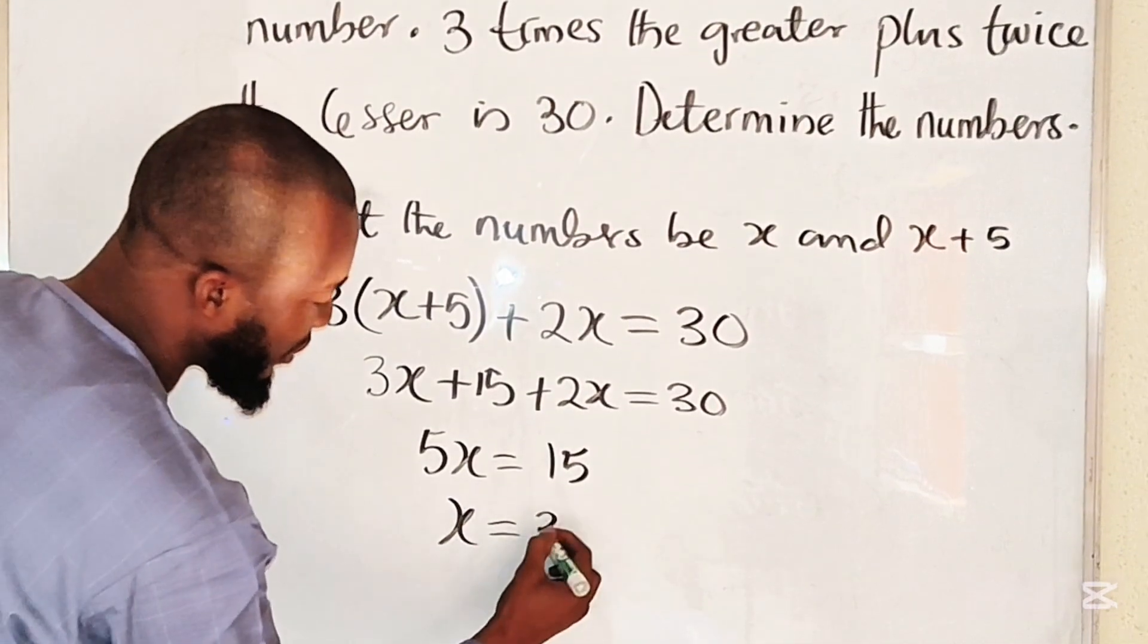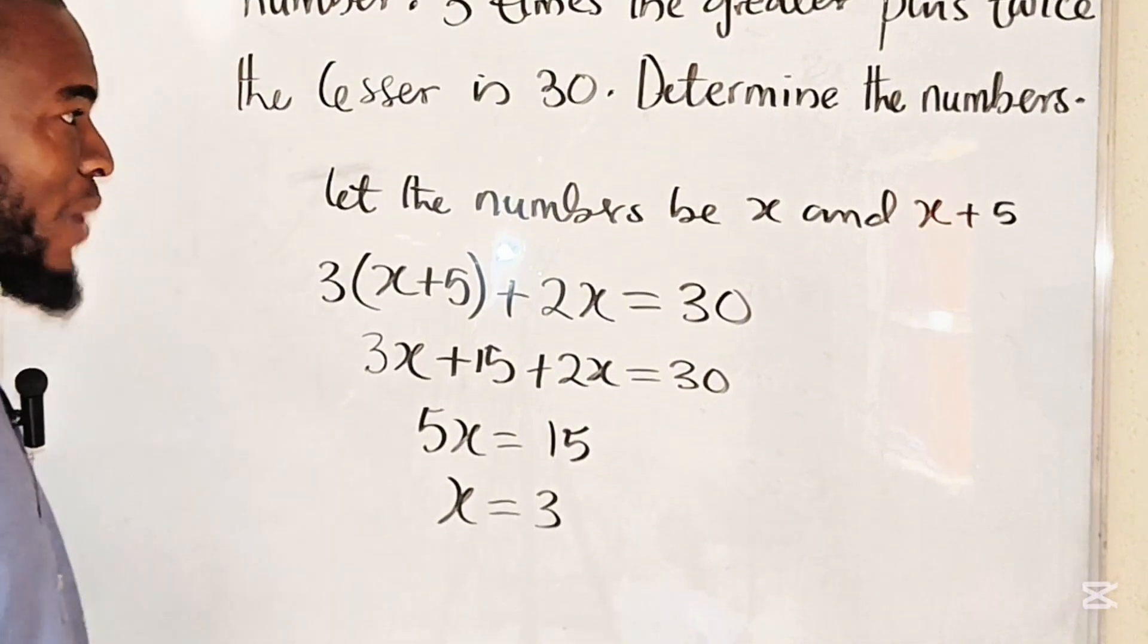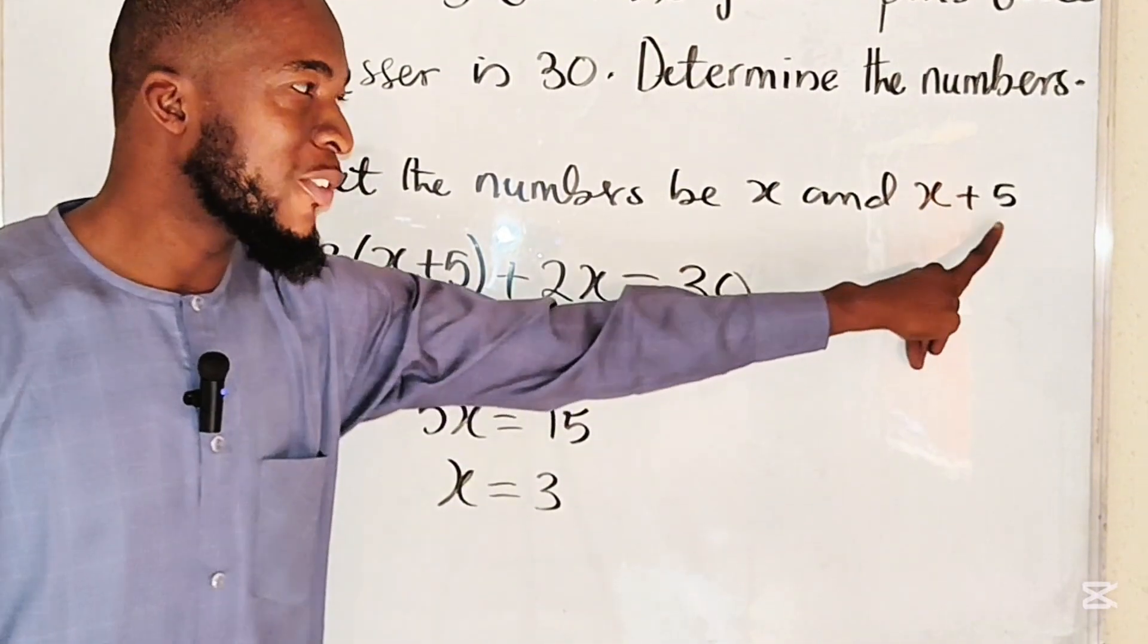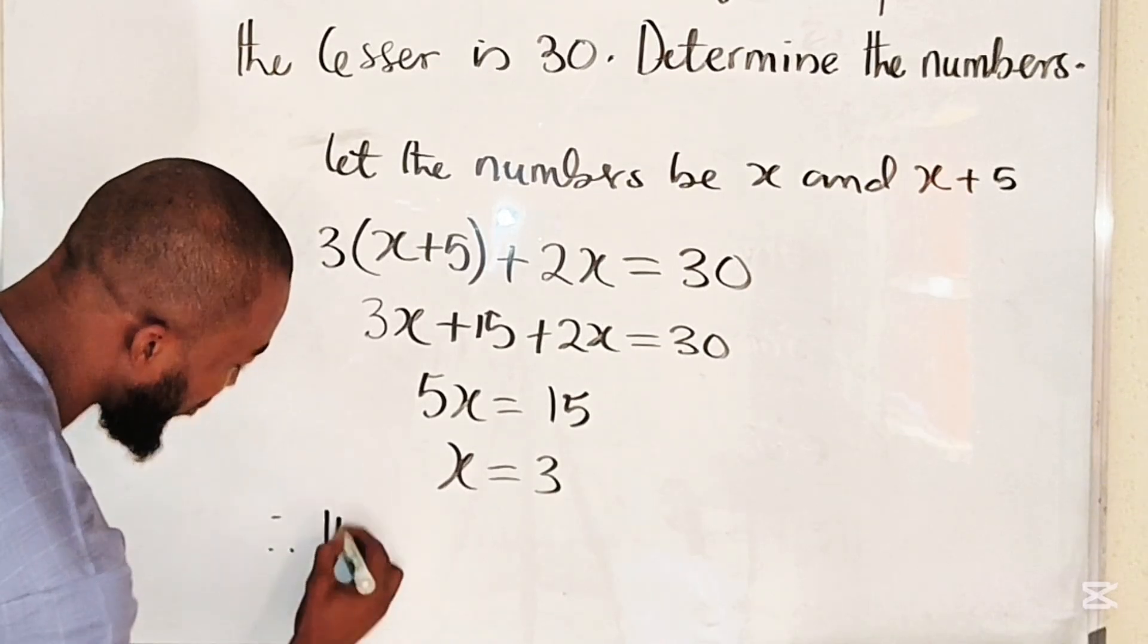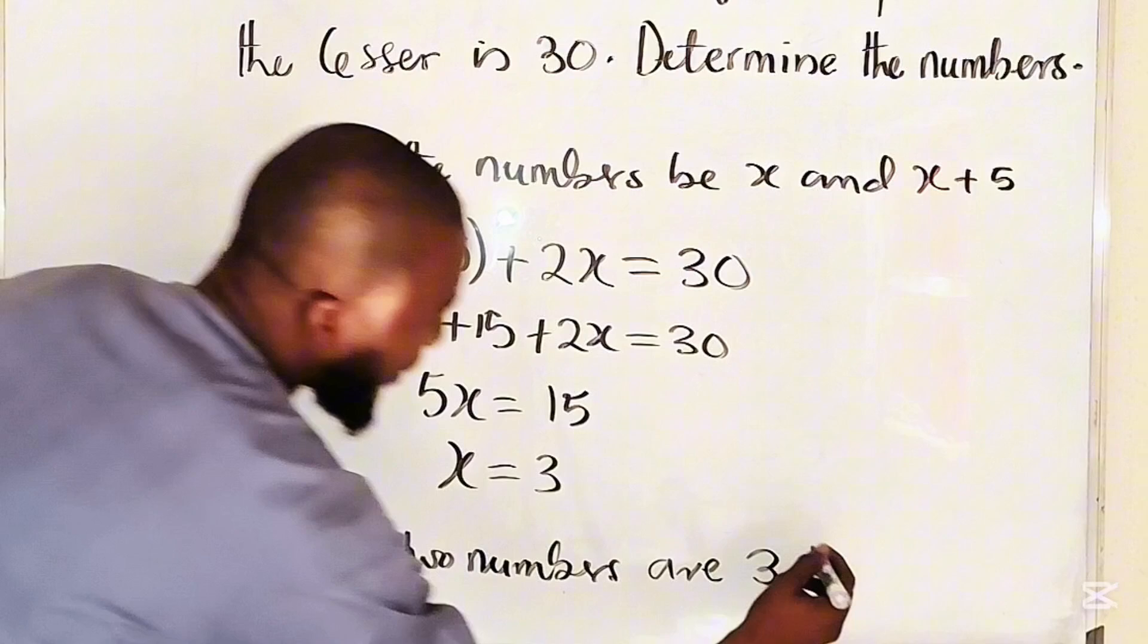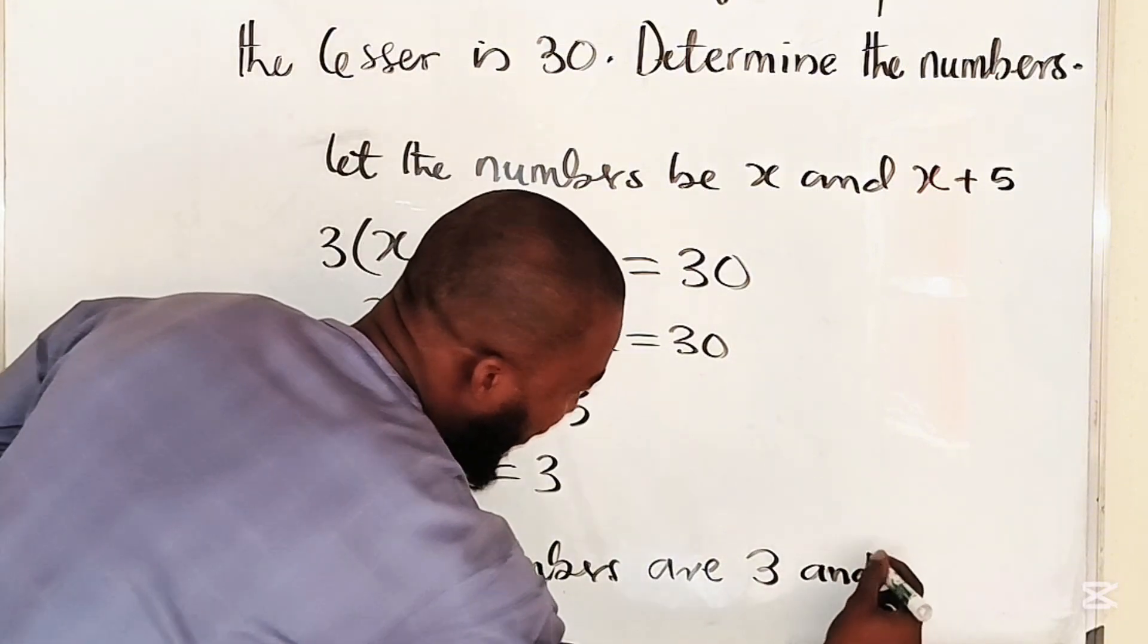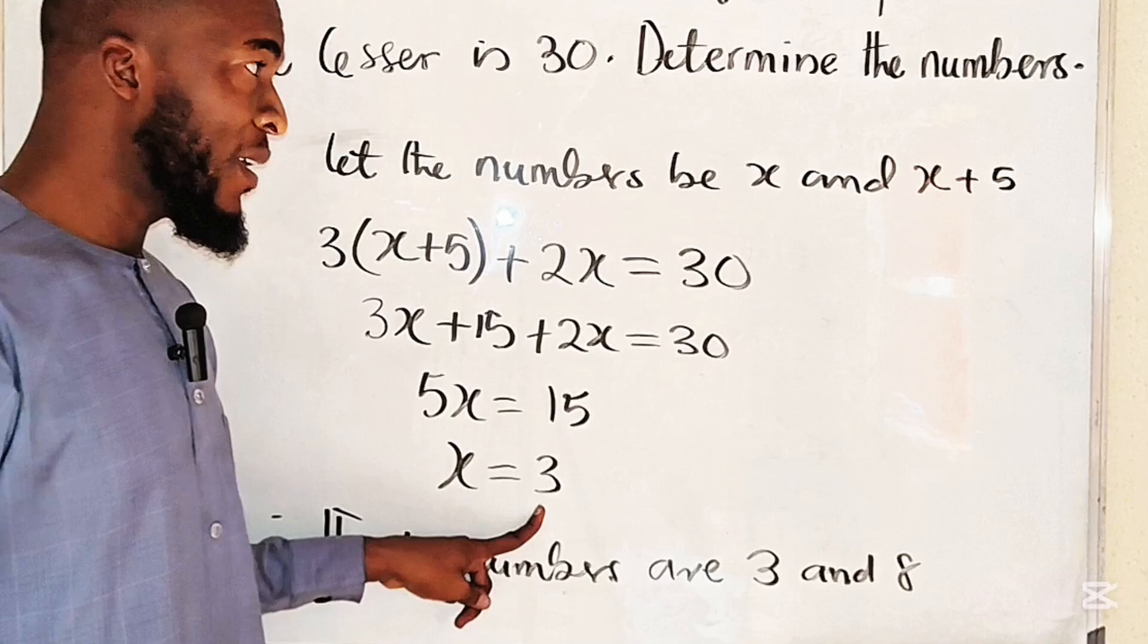So the smaller number is 3. The bigger number would be what? 3 plus 5, which is 8. So therefore, the two numbers are 3 and 8, because the smaller number is x and the bigger number is x plus 5. As simple as that—3 and 8.